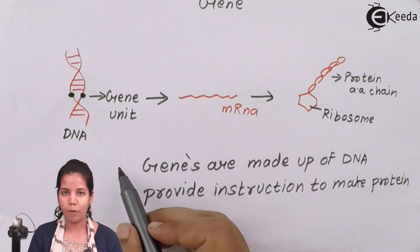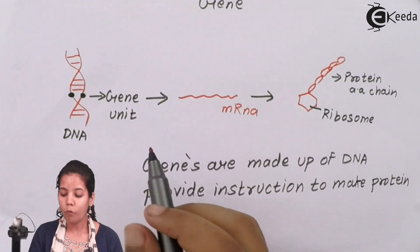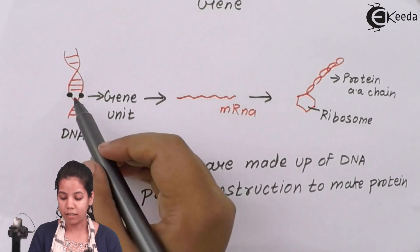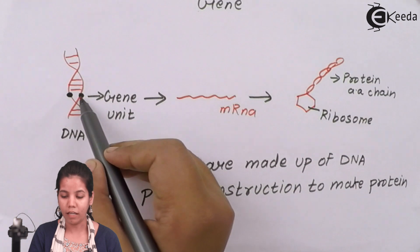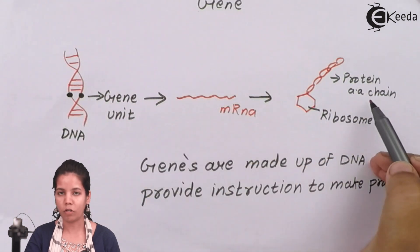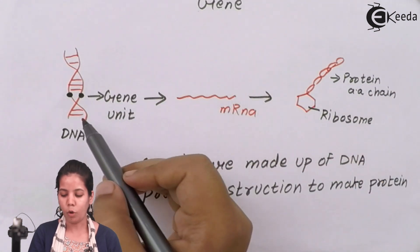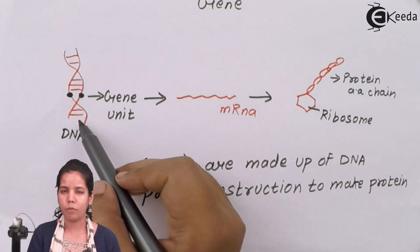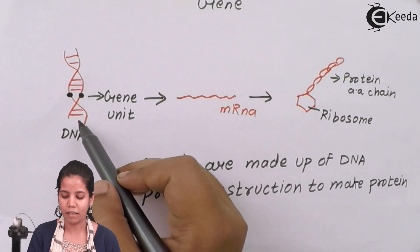In this diagram what is shown is how from a DNA that is the gene which is present on the DNA, the journey goes to the production of a polypeptide chain that is for the production of a trait. Now we all know that DNA is double-stranded, helical genetic material.